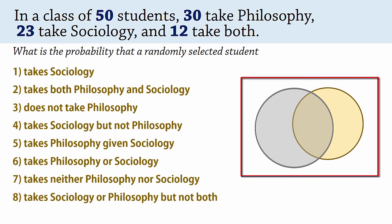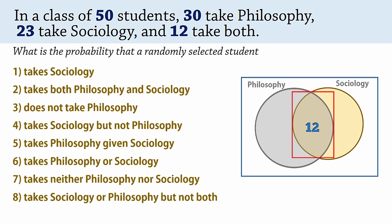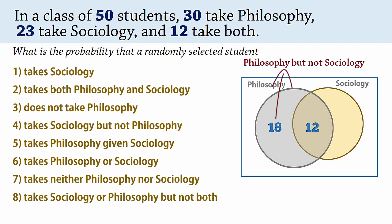The rectangle on the Venn diagram here represents the sample space, that is, the collection of all possible outcomes. Suppose this first circle represents philosophy, and the second one sociology. Since 12 students take both courses, we have 12 at the intersection here. There are 30 students taking philosophy, so we have 30 minus 12, which is 18 remaining here. These 18 take philosophy but not sociology. The total in the philosophy circle must add up to 30, as we see here.